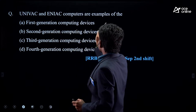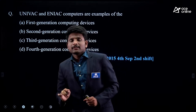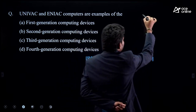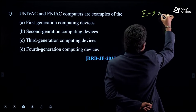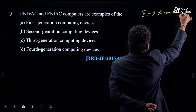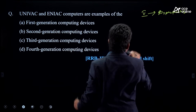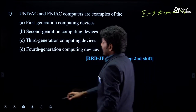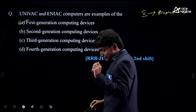Next question: 'UNIVAC and ENIAC computers are examples of...' Just try to understand this question. In the previous question about fifth generation computers, they asked about expectations. In this question, they have given two computer names, and both are related to first generation computer. It is a memory-based question.